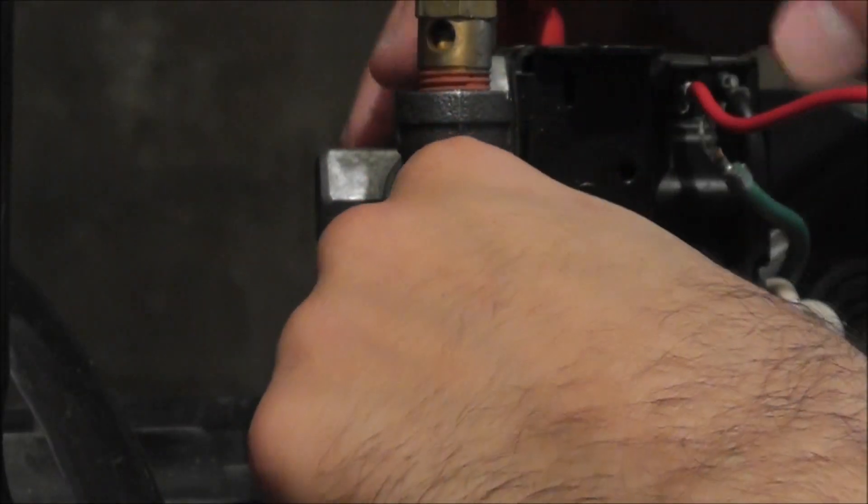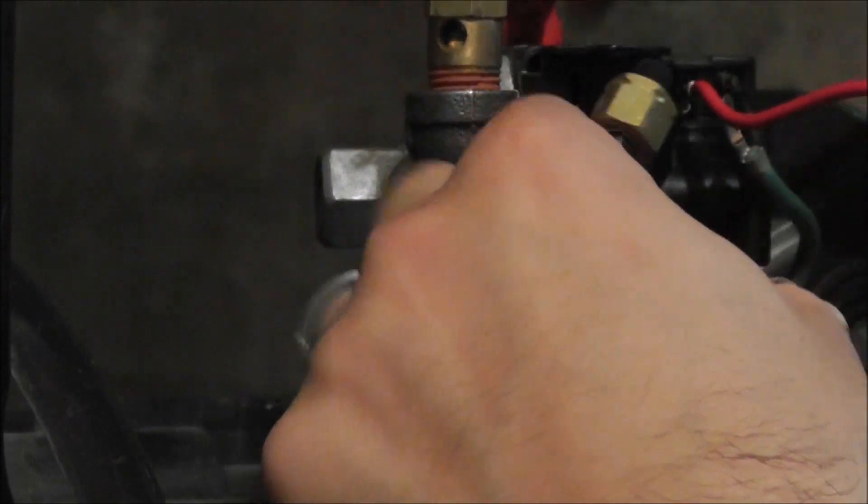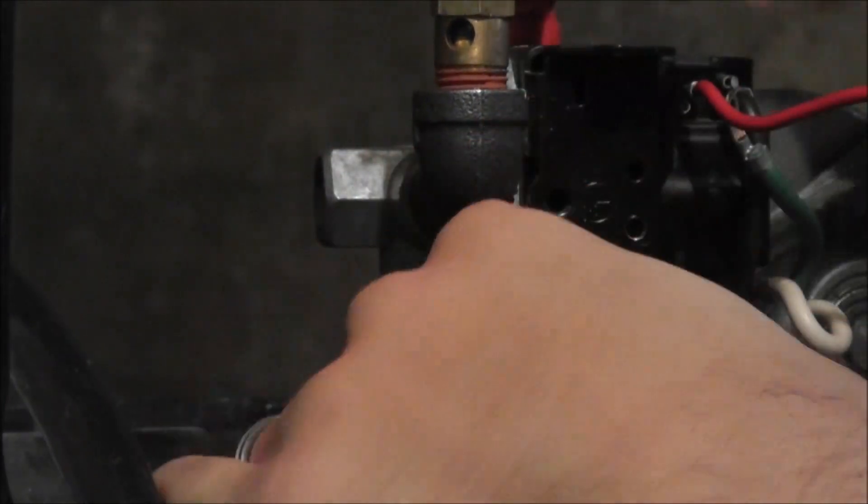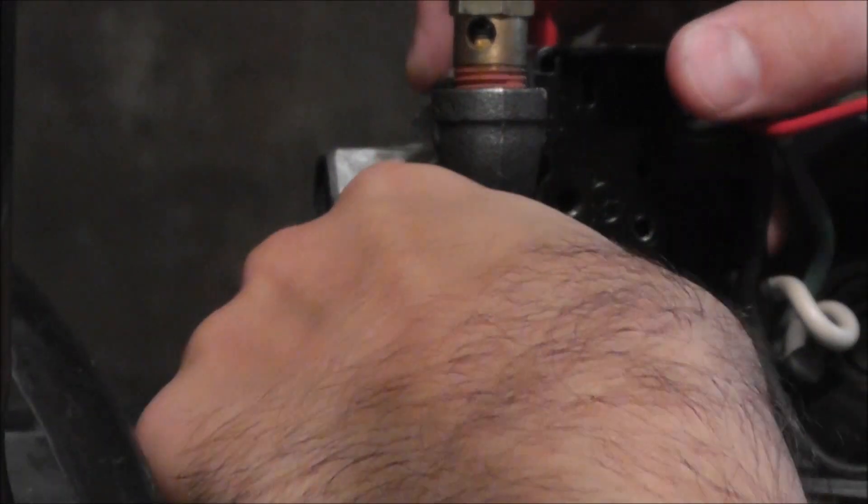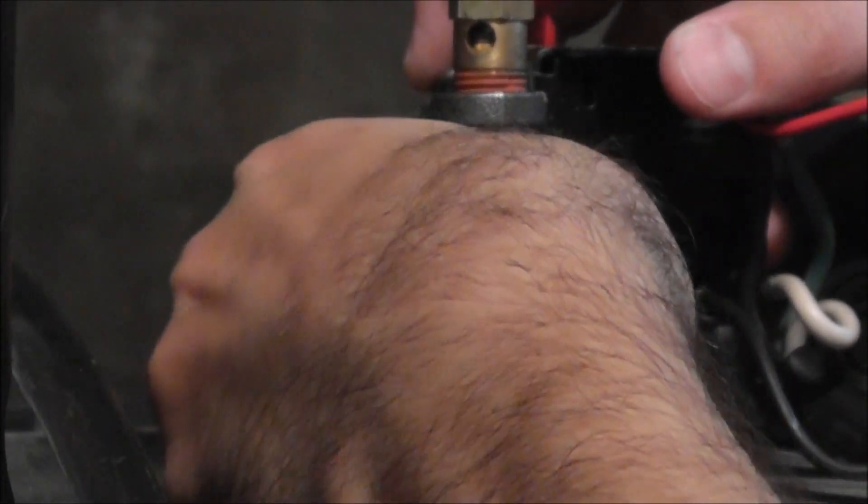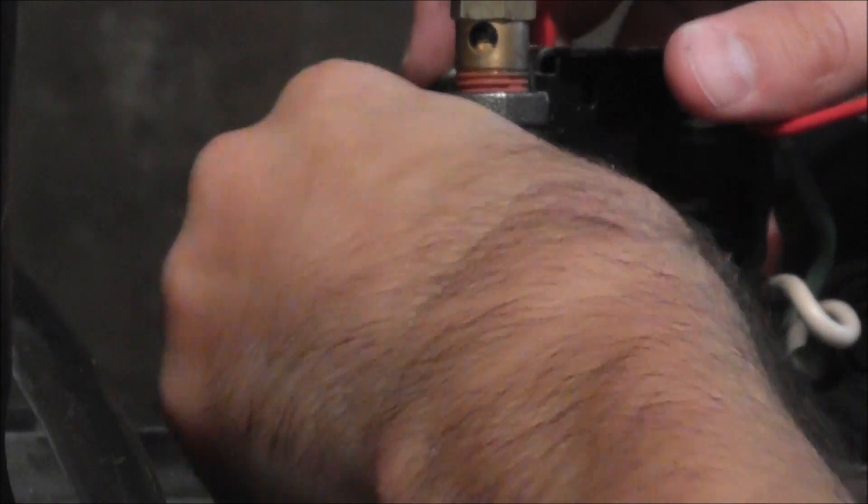So once you do have that installed, and again, I have the unloader line off here. It goes to the unloader valve and the pressure switch. You'll need to connect that next. Here you'll see the unloader valve, which unloads all the excess pressure off the line. Once it shuts off, simply attach that back with a quarter-inch compression nut onto the valve itself.